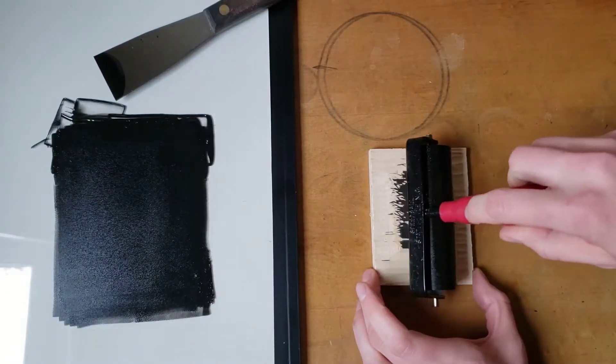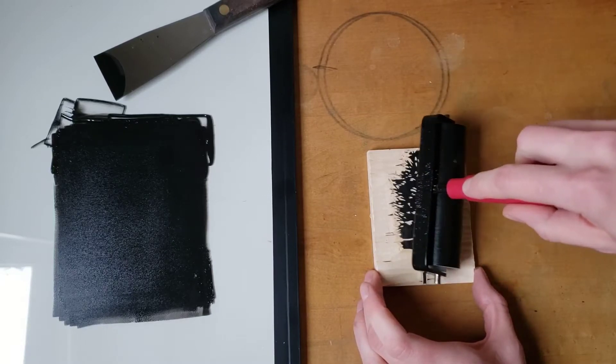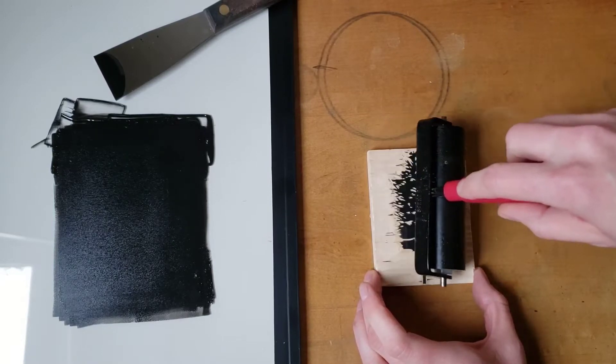Apply ink to the plate with strokes that go in different directions. This helps avoid brayer marks and evens out the application.